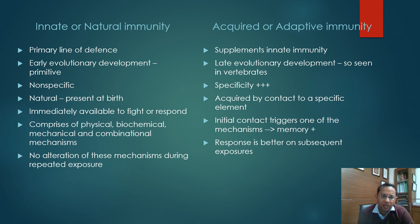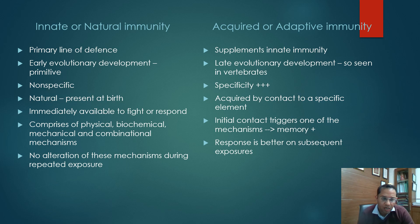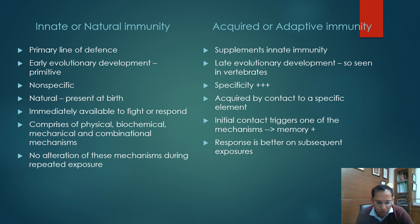Coming to the differences between innate and adaptive immunity: innate immunity is the primary line of defense. Since it is the primary line, it starts very early in evolutionary development — it is very primitive. It gives non-specific immunity and is naturally present at birth. It is immediately available to fight infection when it comes. It comprises physical, biochemical, mechanical, and combinational mechanisms, and there is no alteration of these mechanisms during repeated exposure.